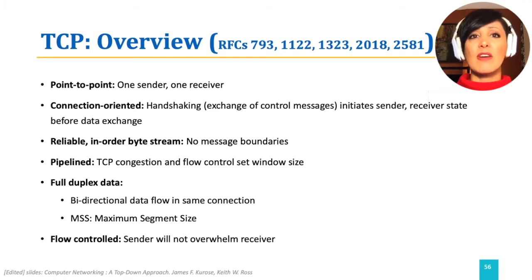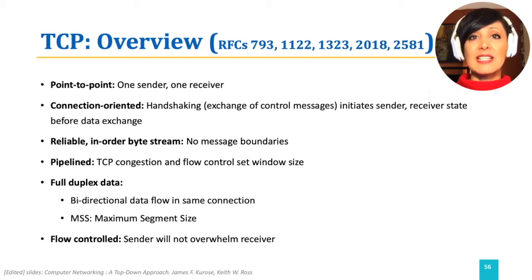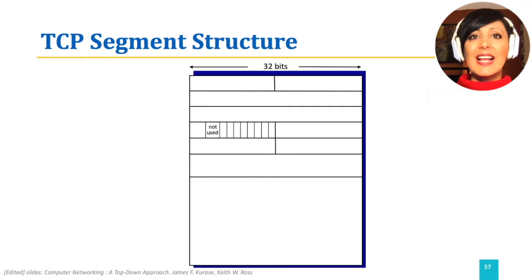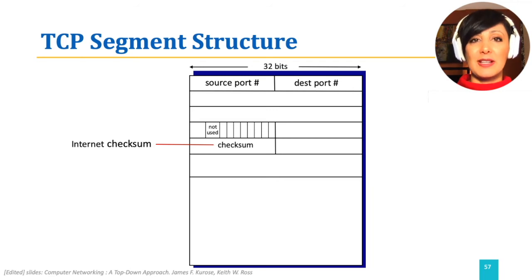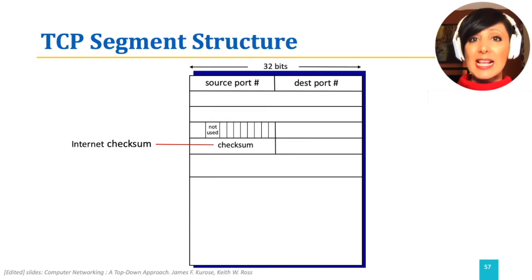It also offers some more, but let's dig in and see what each of these items mean in detail. Let's start with taking a look at the TCP segment structure. The TCP header, like the UDP header, has a source port number, destination port number, and checksum fields. These are used for multiplexing and demultiplexing and error detection, as we discussed.